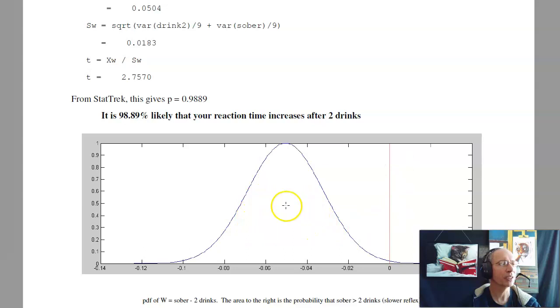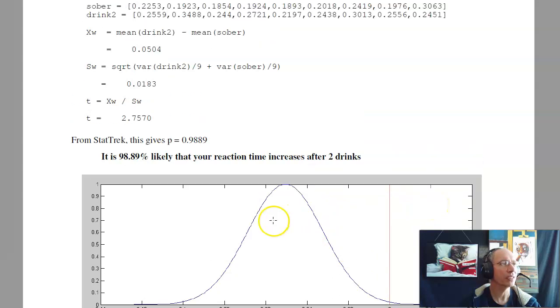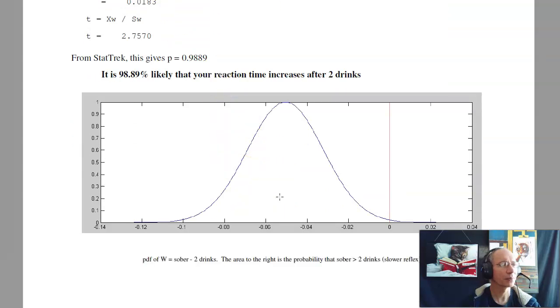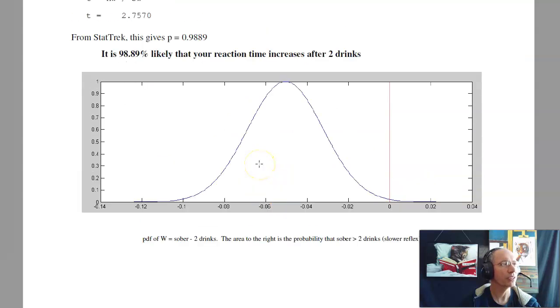What that means is, I didn't draw this correct, the mean is positive. So your reaction time increases after two drinks with a probability of 98%. So that's homework set number 13 for ECE 341, Random Processes. Again, for a t-test, I can test a single population or two populations. If you want to test more than two populations, that's where you use an analysis of variance, an ANOVA test. That will be homework set number 15 coming up.